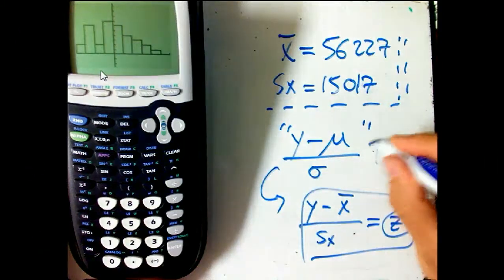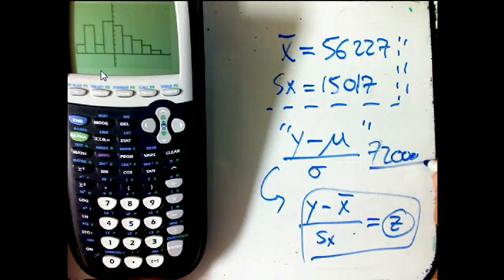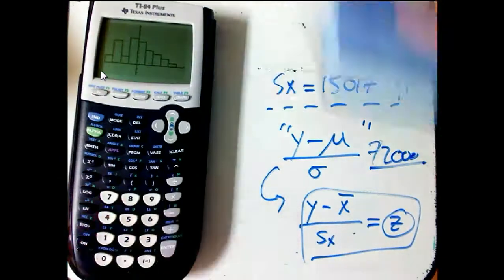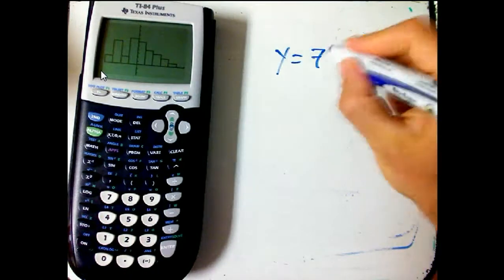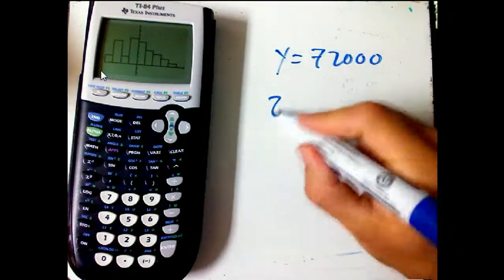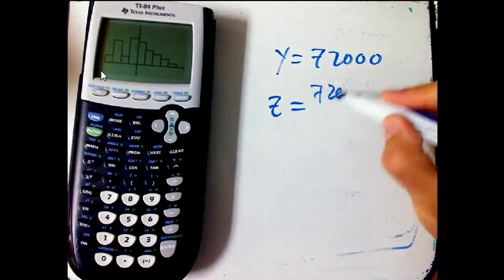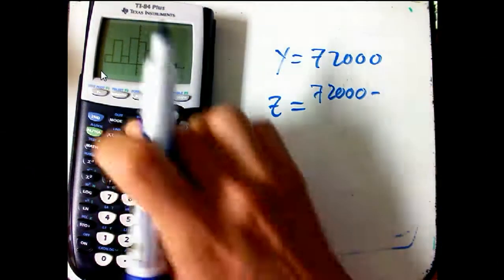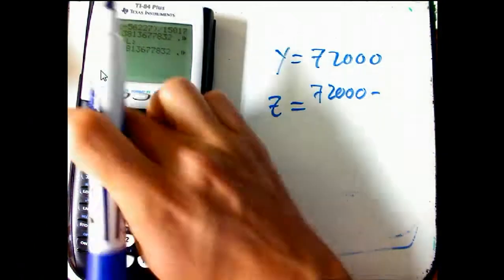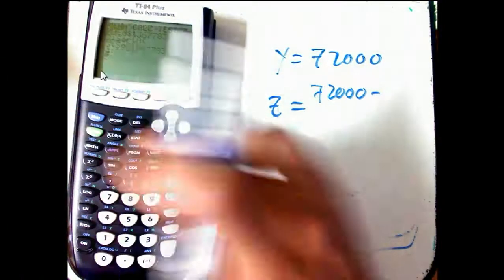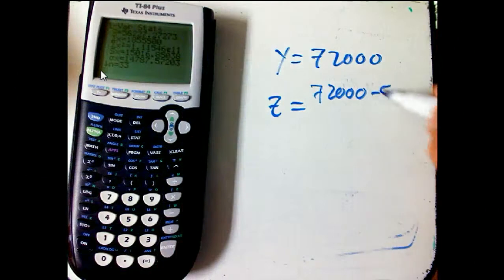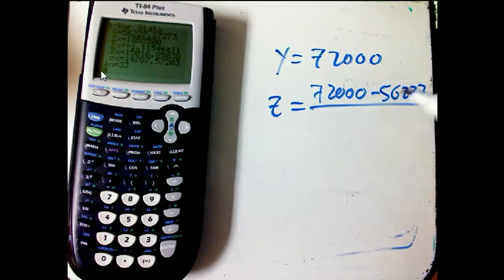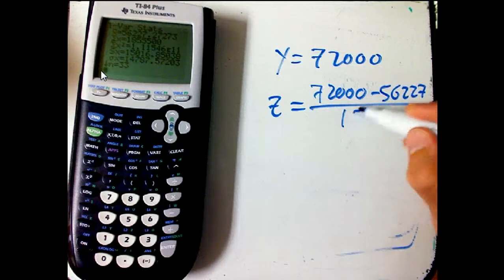Now, what was that question? We had $72,000. What's the z-score for that? So let's go ahead and—ooh, I shouldn't have erased that. So if Y is $72,000, then let's just do the z-score by hand. $72,000 minus, now what was one of our stats? It was 56,227 divided by, and then we're going to divide it by 15,017.